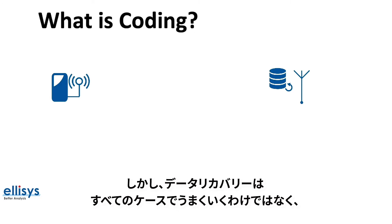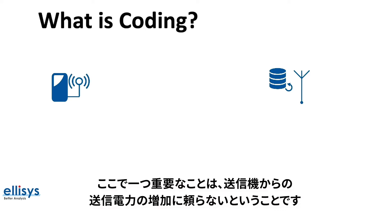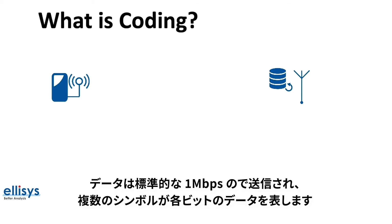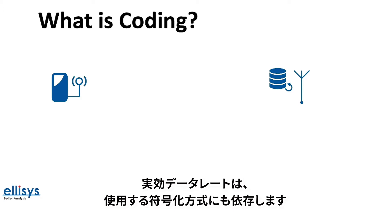However, data recovery does not work in all cases, especially if the received data is highly corrupted. One important thing to note is that Coded PHY does not rely on increased transmit power from the transmitter; rather, data is sent at the standard 1 mega symbol per second rate where multiple symbols represent each bit of data. This means the effective data rate will be reduced compared to the standard 1 megabit per second rate, and the effective data rate also depends on the coding scheme used.